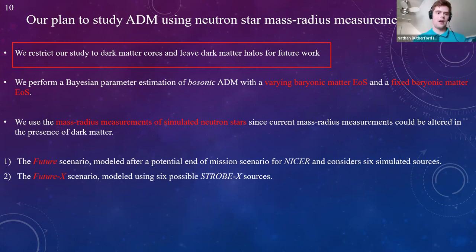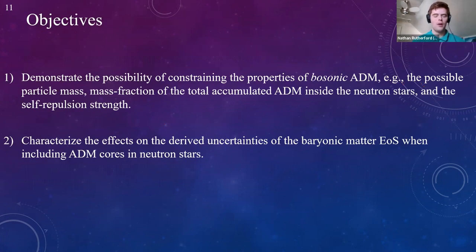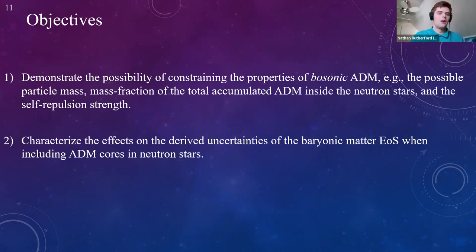Our objective is to demonstrate the ability of Bayesian inference to constrain the properties of bosonic asymmetric dark matter: the possible particle mass, the mass fraction of total accumulated ADM inside the neutron star, and the self-repulsion strength. Secondly, we want to characterize the effects of the derived uncertainties of the baryonic matter equation of state when including ADM cores in neutron stars, with a side goal of showing that future X can provide tighter constraints.